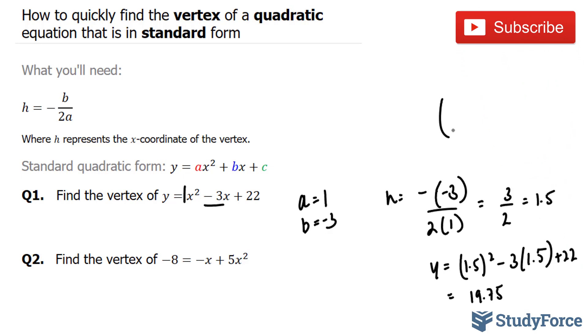So therefore, our vertex will be at 1.5 and 19.75. Let's move on to question 2.